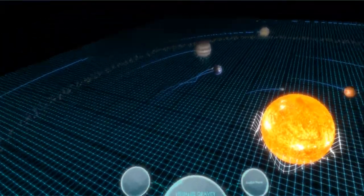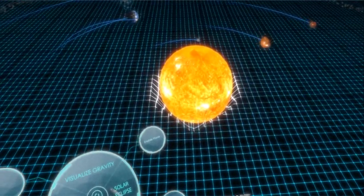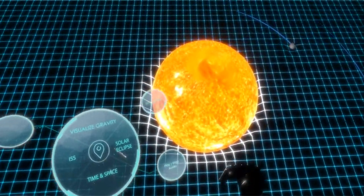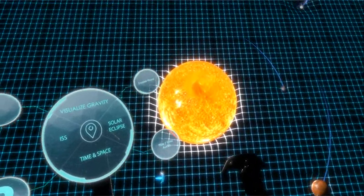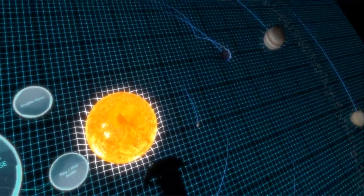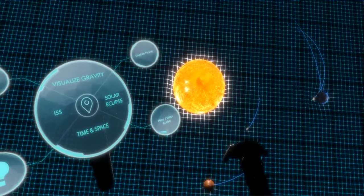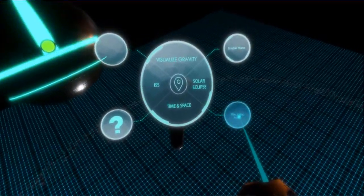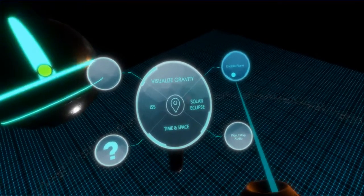Gravity makes the apple fall from the tree and shapes our entire planetary system. Gravitation traps the planets in their paths around the sun. It is the cosmic force that connects everything.